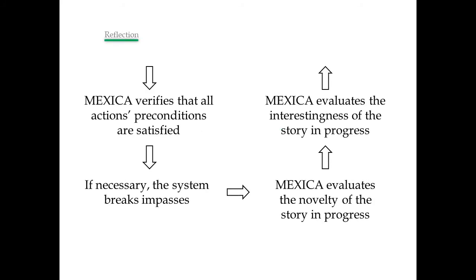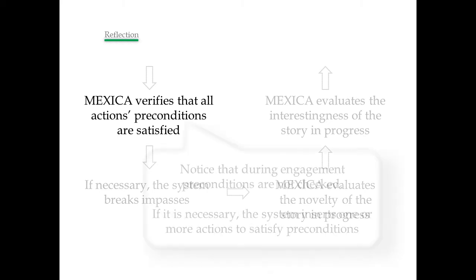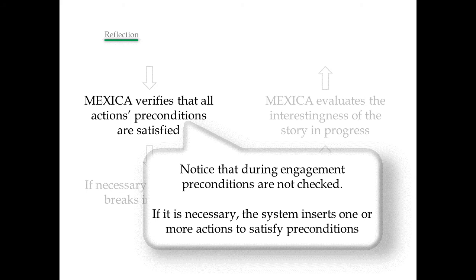Reflection has four main processes. First, Mexica verifies that all actions' preconditions are satisfied. Notice that during engagement, preconditions are not checked — this is an important characteristic of the system. If necessary, the system inserts one or more actions to satisfy the preconditions.